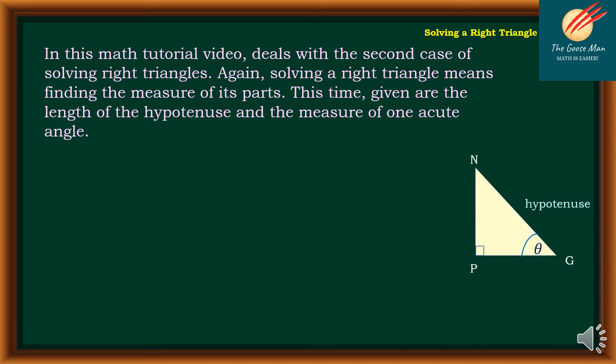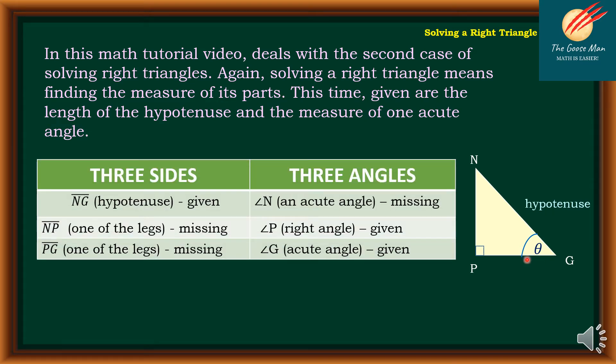If we consider the illustration on the right side, we have triangle PNG where the hypotenuse is NG and the given angle is angle G or theta. For our three sides, we have NG, the hypotenuse, that is given.